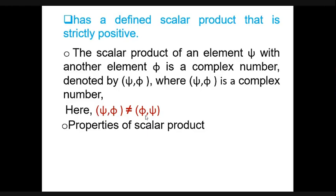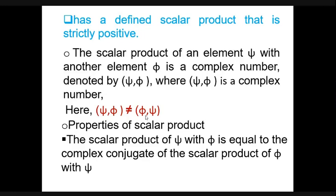The first property of the scalar product is that (psi, phi) is equal to the complex conjugate of (phi, psi). Mathematically, (psi, phi) equals the complex conjugate of (phi, psi), written as (phi, psi)*. So the product is equivalent to its complex conjugate with the order of the elements reversed. It is not directly equal to (phi, psi), but is equivalent to its complex conjugate written in reverse order.